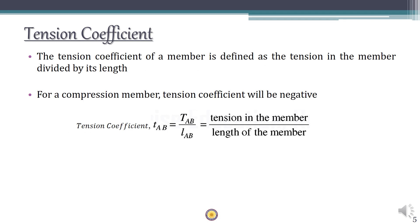The tension coefficient is a name given to a term which is nothing but tension in the member divided by its length. It is denoted by small t_ab, where it is capital T — tension in the member — divided by L, which is the length of member AB. For a compression member, the tension coefficient is going to be negative, because compression is nothing but negative tension.